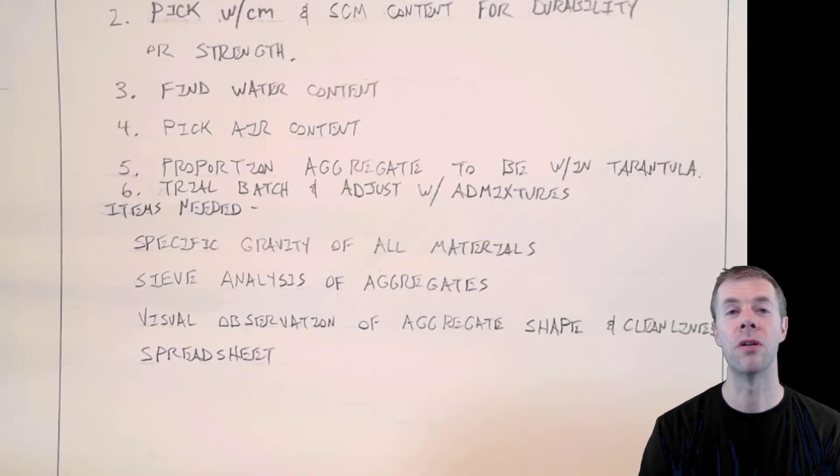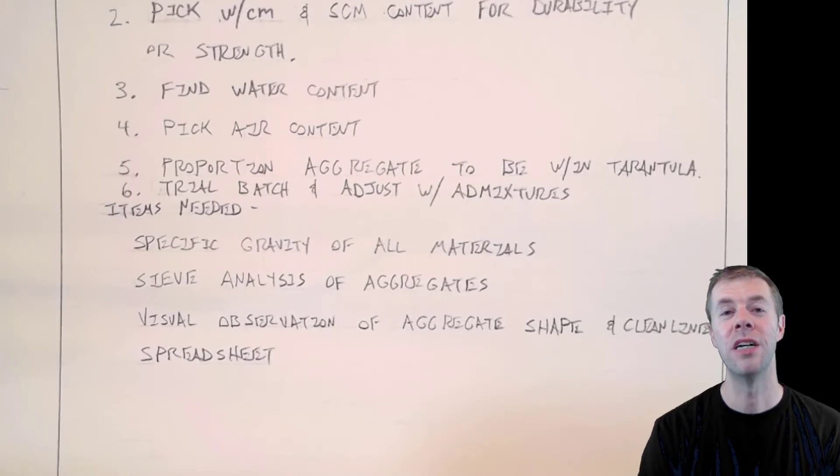Number six, you're going to trial batch and you're going to adjust your concrete mixture with admixtures. To do this procedure, you're going to need the specific gravities of all the materials, you're going to need the sieve analysis of the aggregates, you're going to need visual observations of the aggregate shape, cleanliness, and then you're also going to need a spreadsheet to help make all of this become a reality.